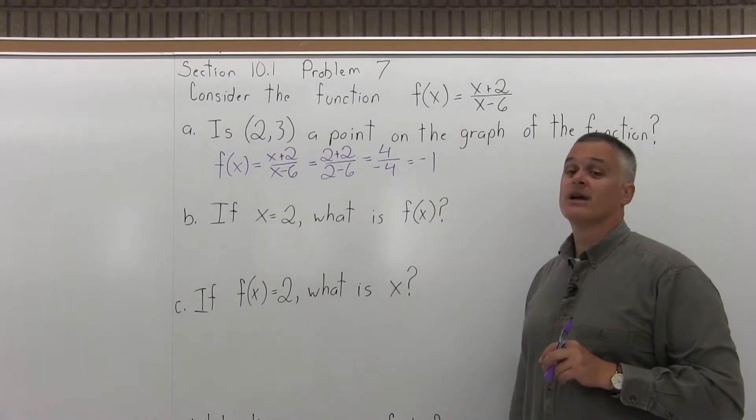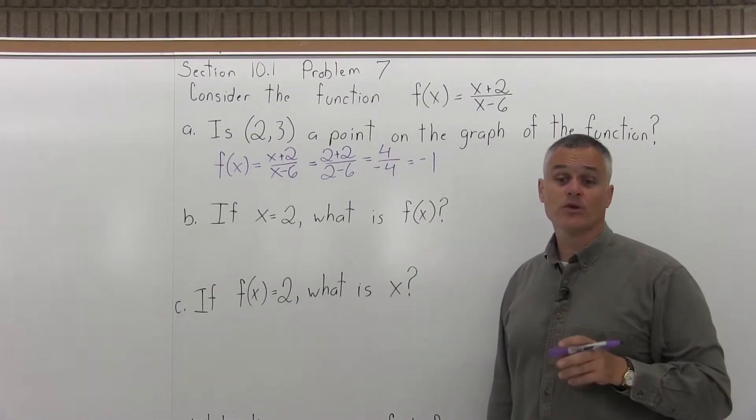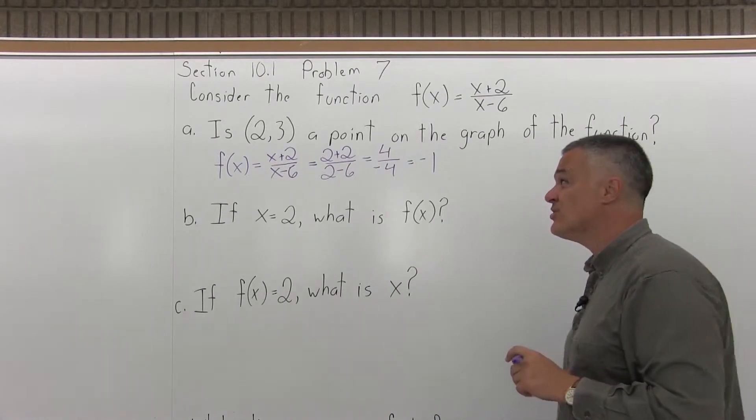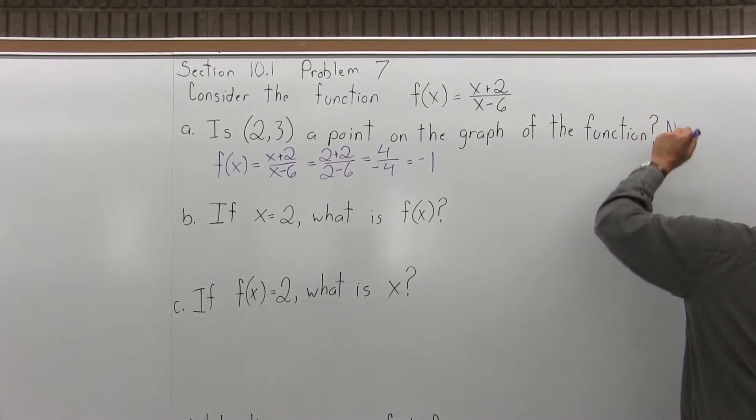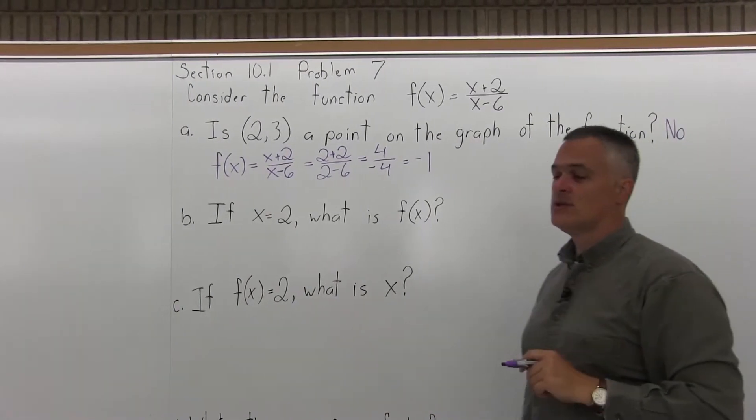If I put in a 2, I get out a negative 1. So the point 2, negative 1 is a point on the graph, but 2 comma 3 is not a point on the graph. So the answer to part A is no.